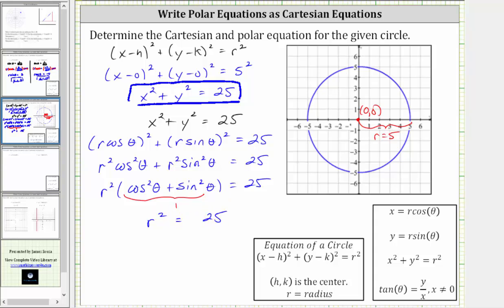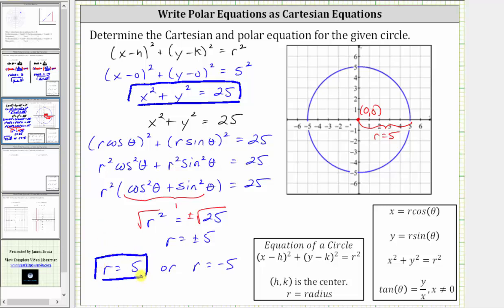We take the square root of both sides of the equation, just as before, which gives us r equals plus or minus five, or r equals positive five, or r equals negative five. Again, the most common polar equation would just be r equals five, but both equations are correct. I hope you found this helpful.